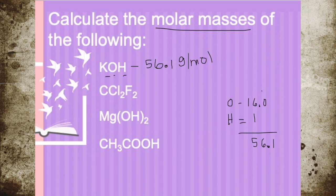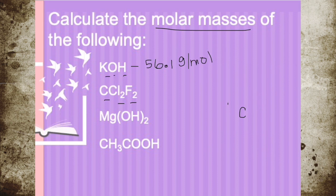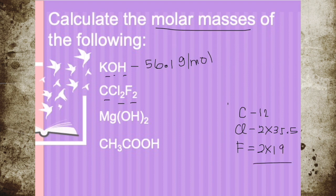The next example, we have CCl2F2. The subscript tells you how many of that element are in the compound. For carbon we have 1, for chlorine we have 2, and for fluorine we have 2. Carbon is 12; chlorine is 2 times 35.5, which is 71; fluorine is 2 times 19, which is 38. Adding them all together gives 121. Therefore, CCl2F2 has a molar mass of 121 grams per mole.